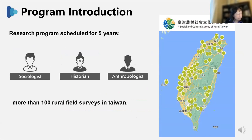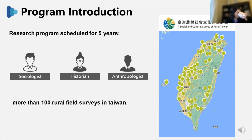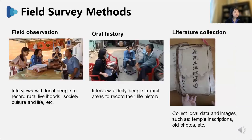The SCSRT is a research program scheduled for five years. The research team is composed of scholars with interdisciplinary backgrounds, including in the fields of sociology, history, and anthropology. The study uses methods of field research, historical document analysis, and literary analysis to present the results of the investigation and study the current situation of more than 100 rural areas in Taiwan. We have adopted different methods to obtain the needed data — for instance, using field observation to interview local people to acquire records on the social and cultural information of a place.